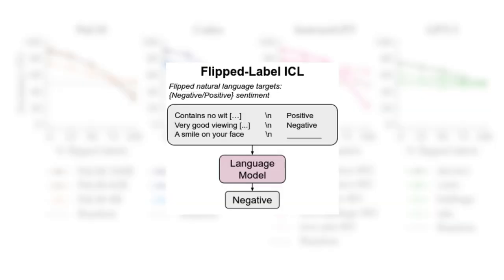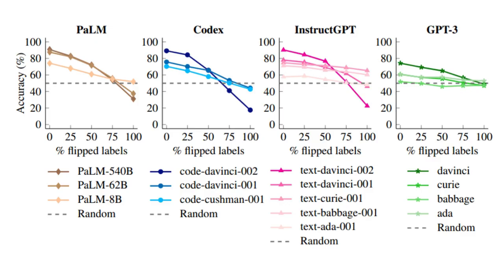In the first result we'll explore, the authors used the flip-label ICL flavor. What they saw is the following figure. On the y-axis, we have the accuracy on a given task. On the x-axis, we have the percentage of flip-labeled in an in-context learning prompt. This is per family of models and per model size.